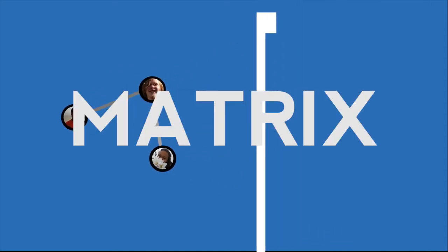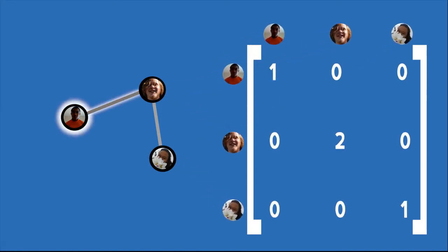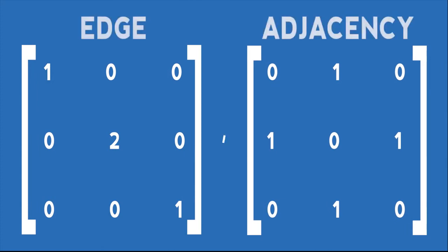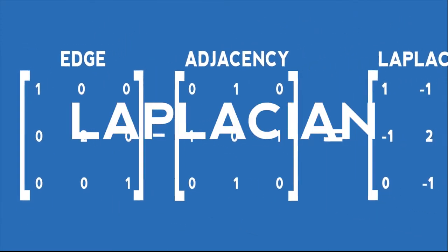We also have the edge matrix and all it says is how many connections does a dot have. For instance, I have only one friend, so I'll put a one on my spot. If I combine these matrices with a calculator, I get the most important matrix of a graph, the Laplacian.